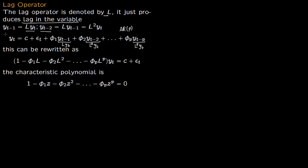Now take all these terms to the left-hand side. You get 1 minus φ₁L minus φ₂L² minus ... minus φₚLᵖ, all multiplied by y(t), on the left-hand side. The right-hand side has just the constant c plus the error term ε(t).